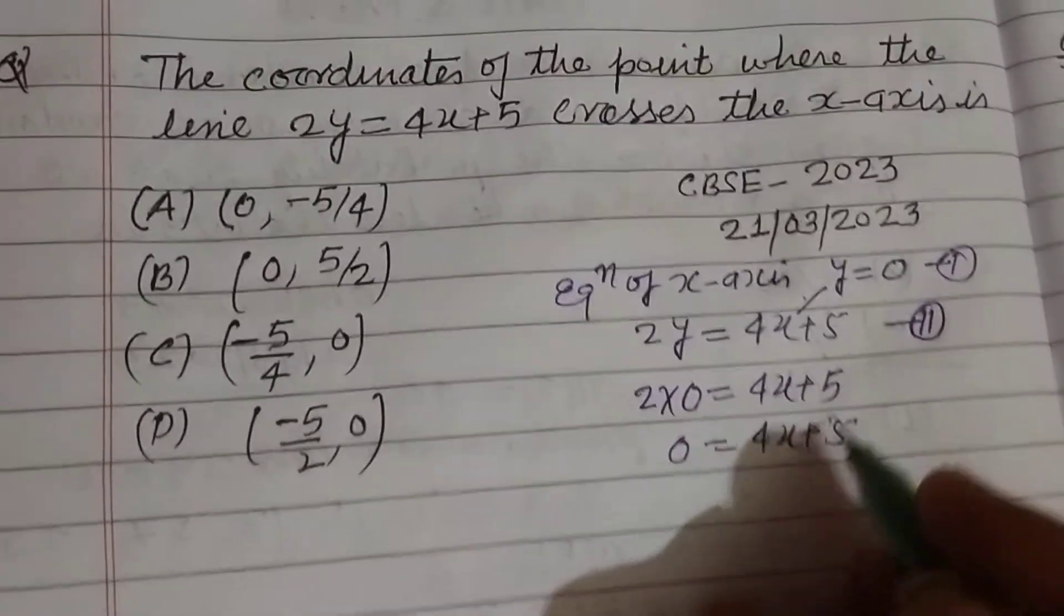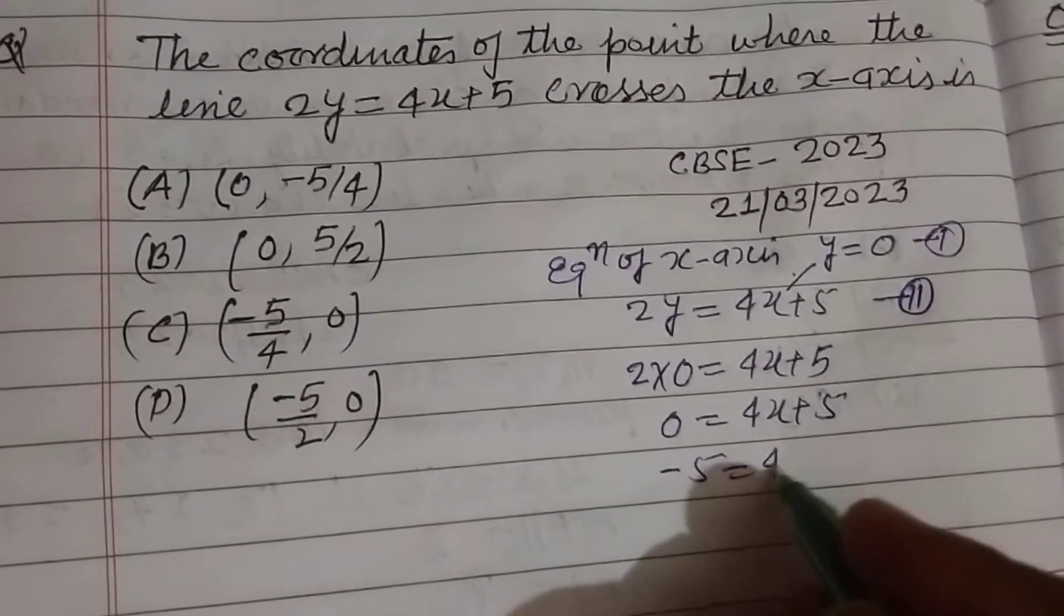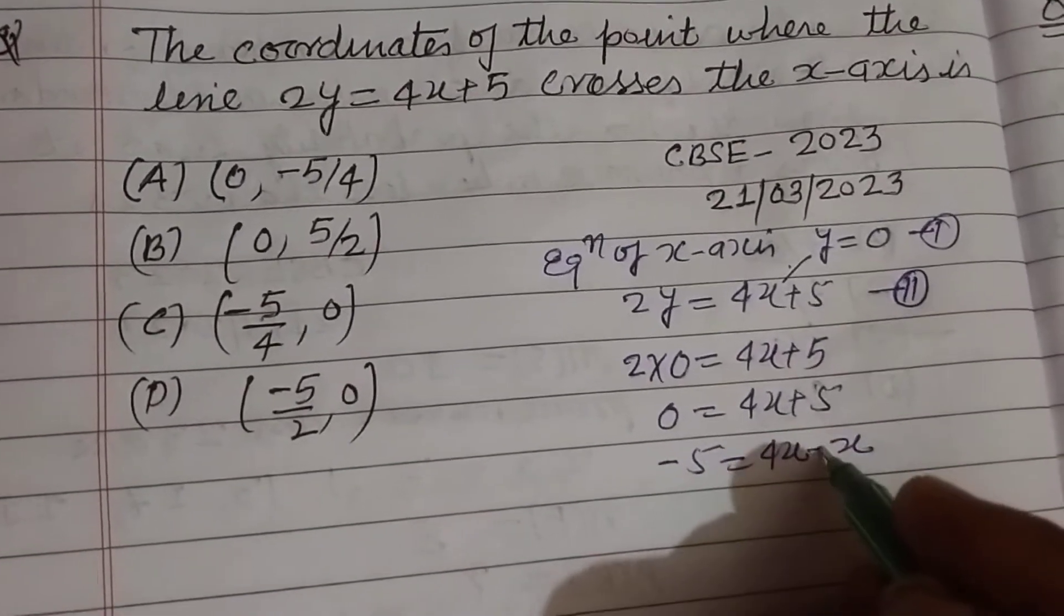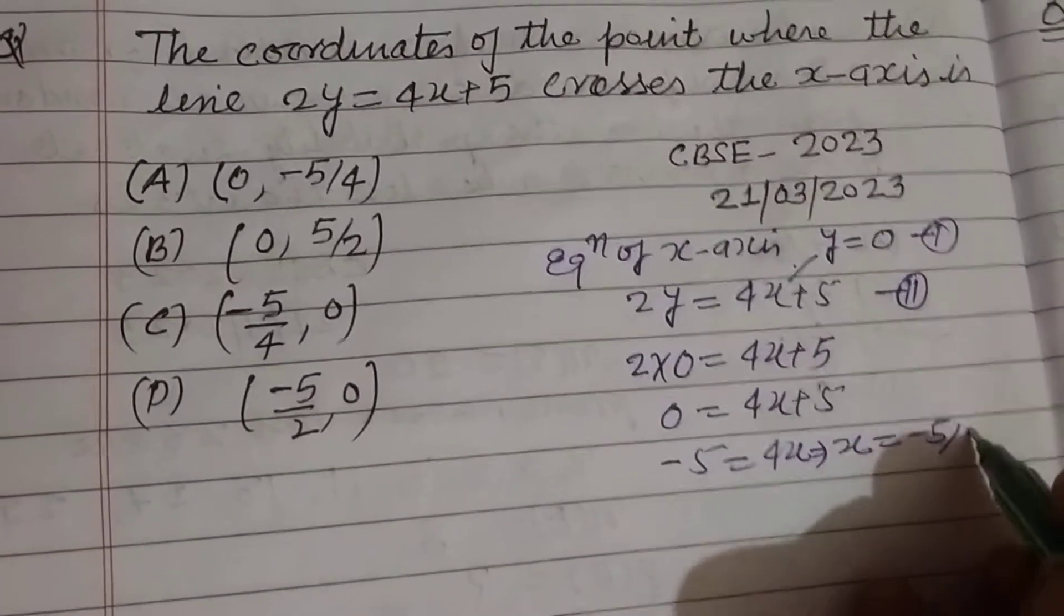So minus 5 equals 4x, or x equals minus 5 by 4.